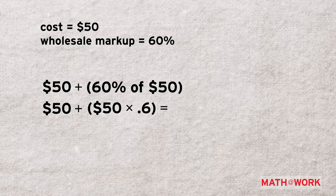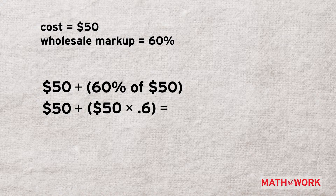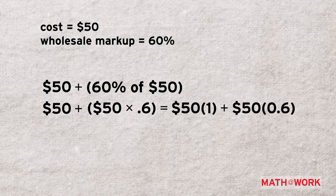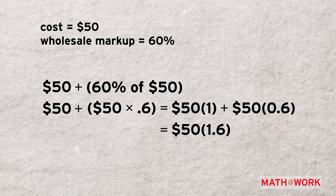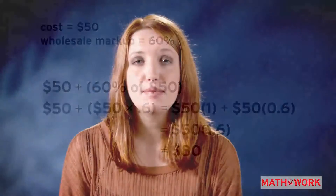According to the identity property, if you multiply a number by 1, the product is equal to that number. We can use the identity property to simplify the problem. By combining like terms, you can see that the sum is equal to 50 times 1 and 6 tenths, which is 80. A 60% markup on the original price of the dress means that Jesselyn will sell it to the store for $80.